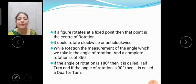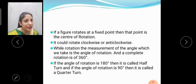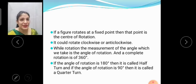If the angle of rotation is 180 degrees, then it is called half turn. And if the angle of rotation is 90 degrees, it is called quarter turn.